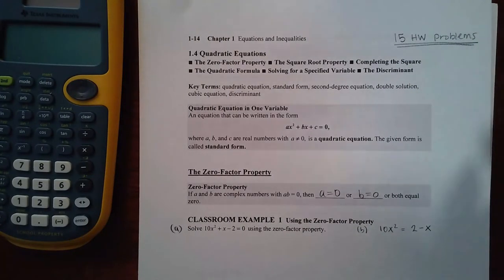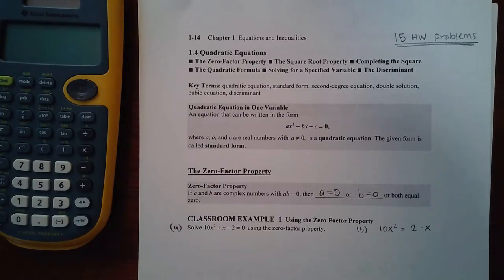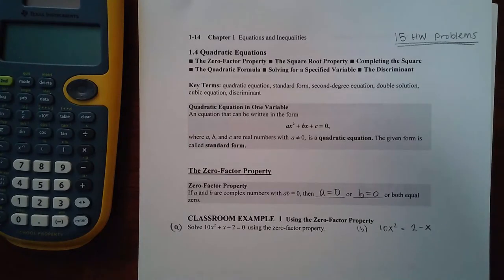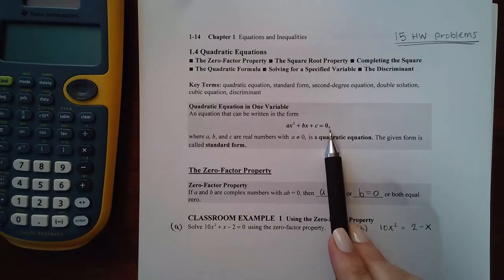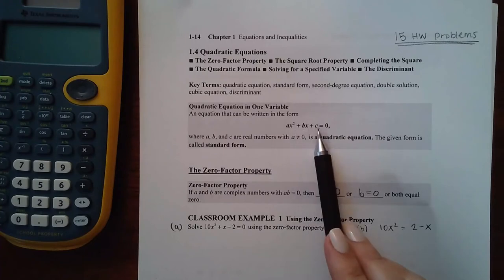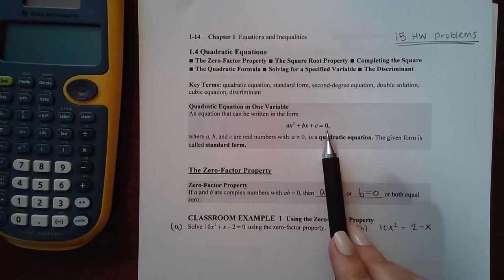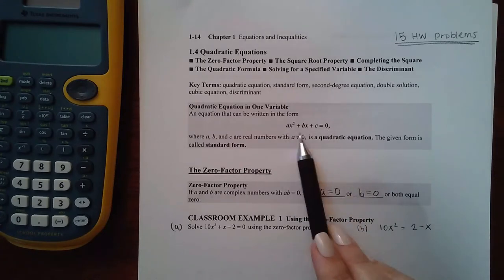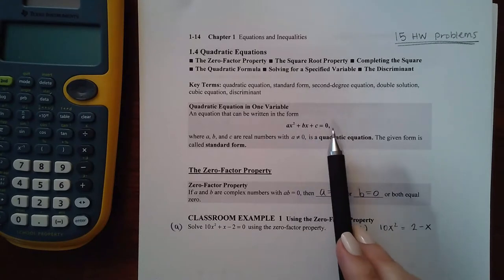Okay, so here we are with Section 1.4, which is quadratic equations. They're going to give us a couple of methods on how to solve quadratic equations. The first thing, no matter which method you're using, is you always want to have your quadratic equation in this form: higher exponent first, constant last, and middle term in the middle, always equal to zero. It needs to be in descending order where the exponent descends until there are no more variables, and you need to have it equal to zero.